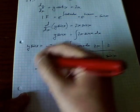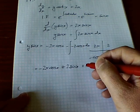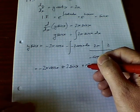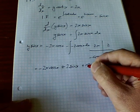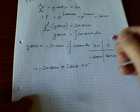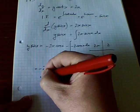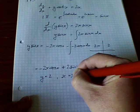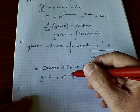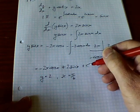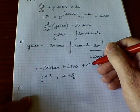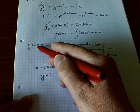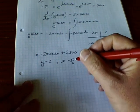That's the general solution, but they gave us some specific information. They said y equals 2 when x equals pi/6, and I'm going to use that information to find c. I'm noting at this point that they want the answer in the form y equals a function of x, so ultimately I'll have to divide through by sin x.